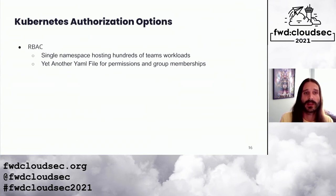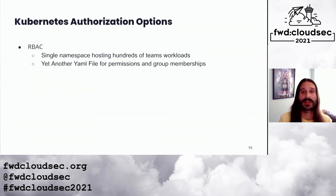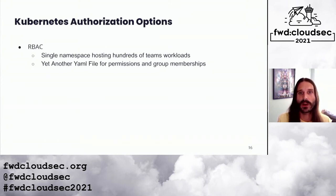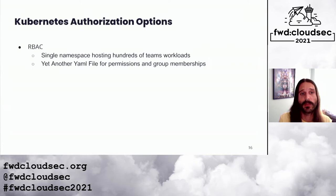Kubernetes has a built-in mechanism for expressing authorization semantics called RBAC — role-based access control. Sounds like it's perfect for our requirements, right? Well, not exactly. RBAC would be appropriate for a relatively small number of workloads and a small number of teams each operating within their own namespace. In our environment we had thousands of workloads owned by hundreds of teams, all operating within a single namespace. Using RBAC to achieve the level of granularity we desired would be tedious and complex to the point that it just wouldn't be practical.